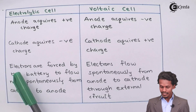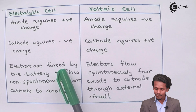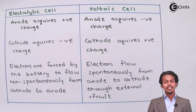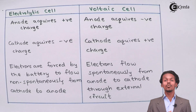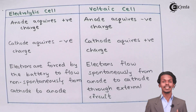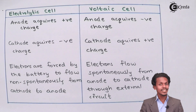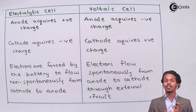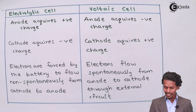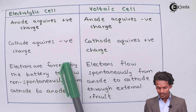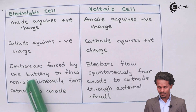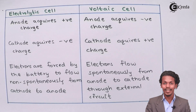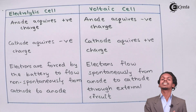In the electrolytic cell, electrons are forced by the battery to flow non-spontaneously from cathode to anode. The term non-spontaneous means we have to purposely provide electricity for the reaction to occur — it would not occur naturally, so we must supply electricity and force the flow of electrons from cathode to anode.